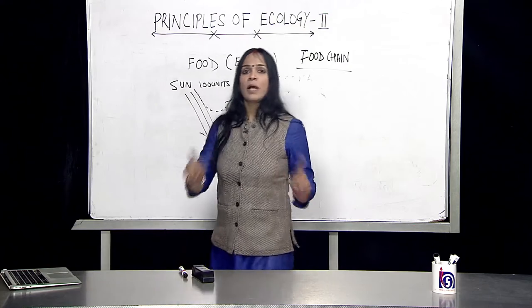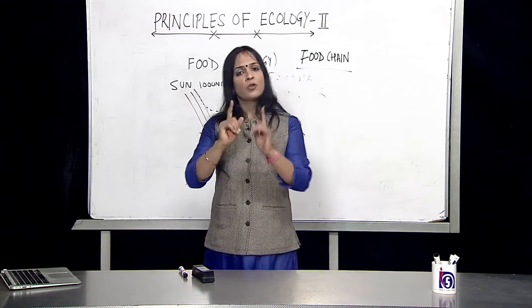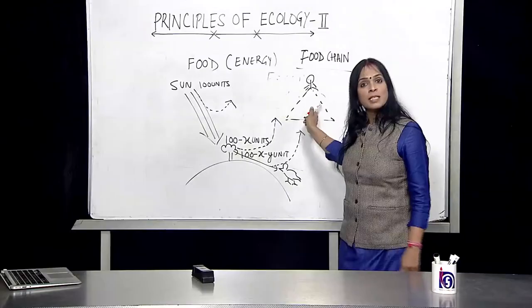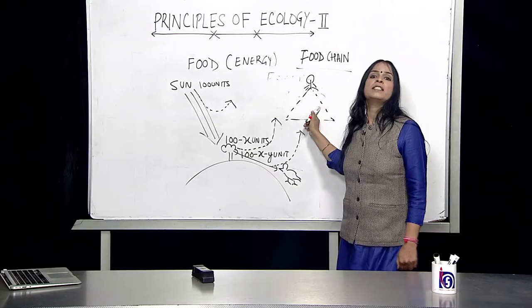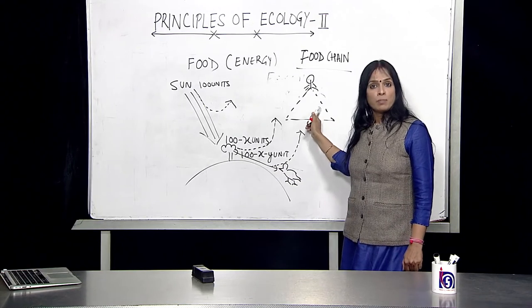When we look at a food chain, the slide shows a pyramid. Where do humans stand? We are almost at the third level, the tertiary consumer — at the apex of this pyramid.